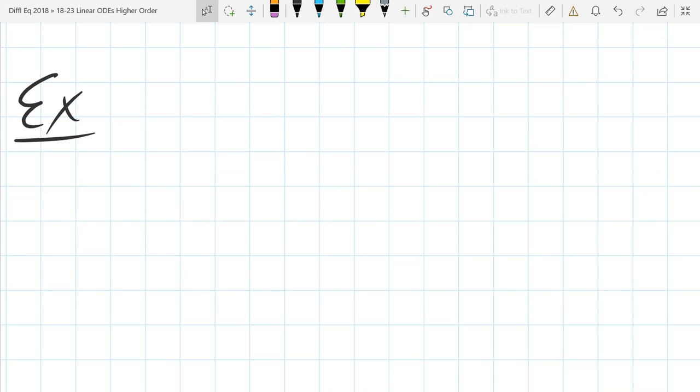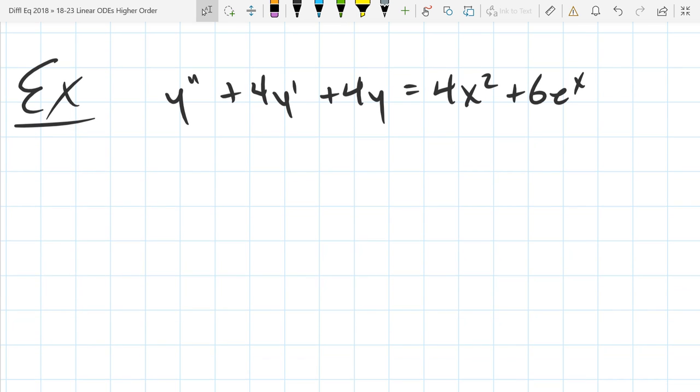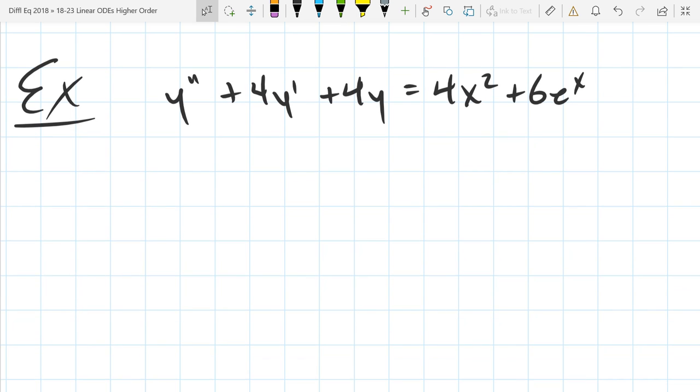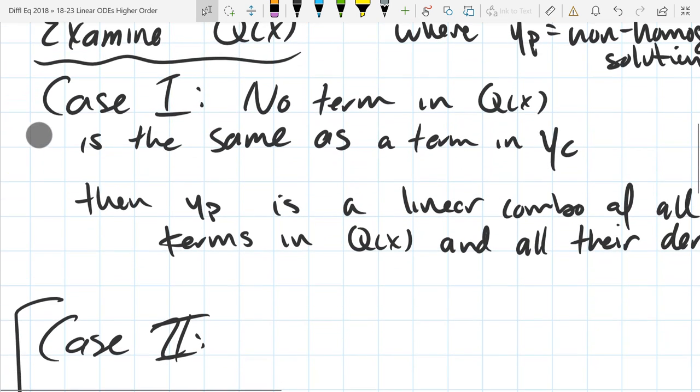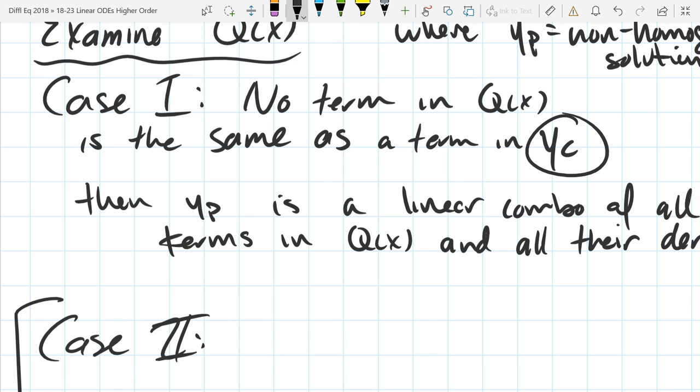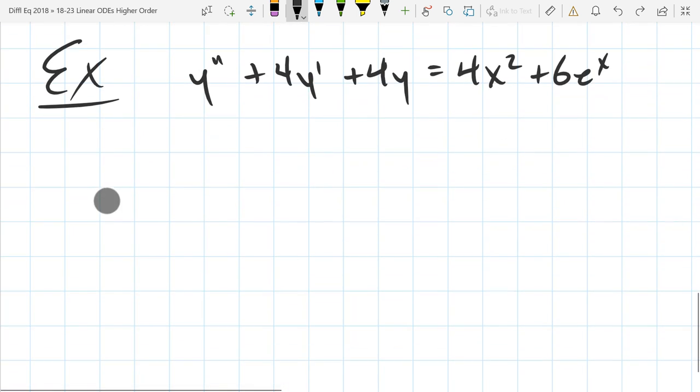Our example is Y double prime plus 4Y prime plus 4Y equals 4X squared plus 6E to the X. Is this the example of case one? Yeah. So we don't really know it's case one yet. We will know it in a few minutes. But we don't really know YC yet. So I want you to find YC right now.